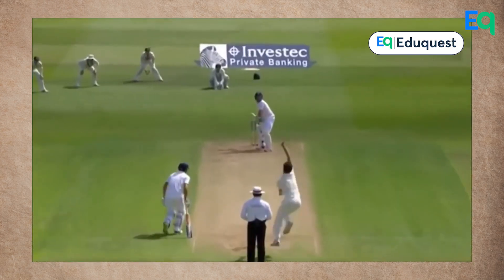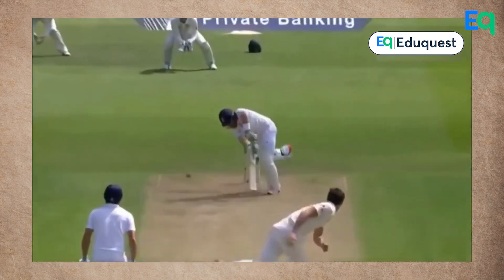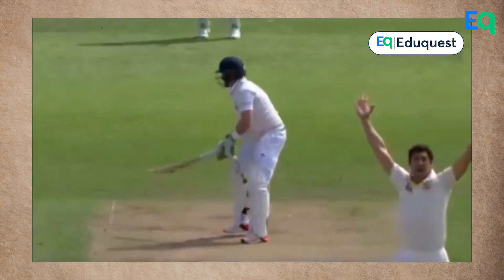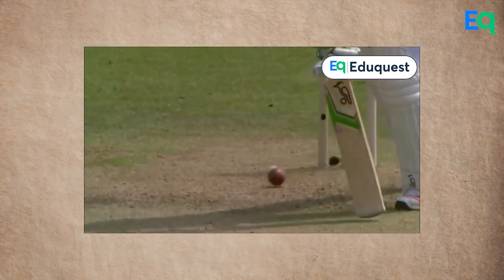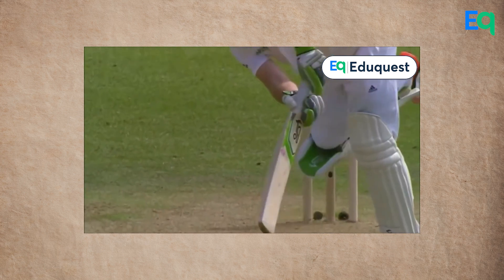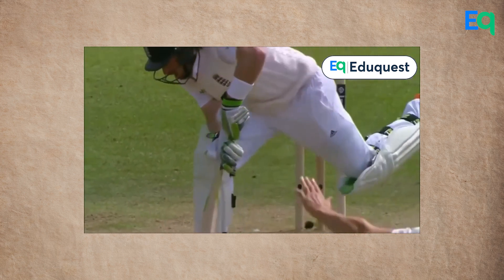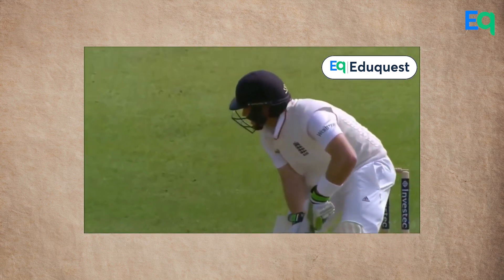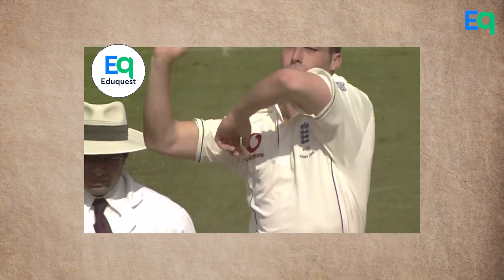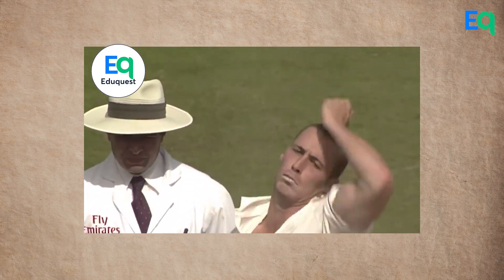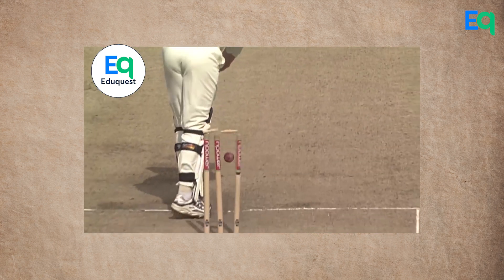Or you can say, if the seam is tilted towards the batsman, then the ball will swing towards the batsman — it is then called in-swing. Similarly, when the seam is tilted away from the batsman, then the ball will go outwards and it's called out-swing.